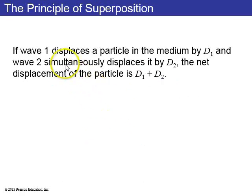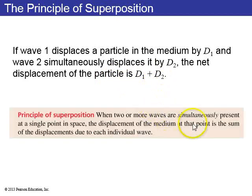That is, if wave 1 displaces a particle in the medium by D1, and wave 2 simultaneously displaces it by D2, the net displacement of the particle in the medium is D1 plus D2. When one or two or more waves are simultaneously present at a single point in space, the displacement of the medium at that point is the sum of the displacements due to each individual wave.